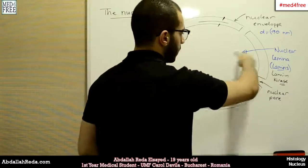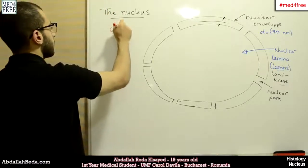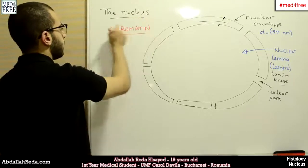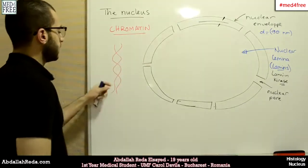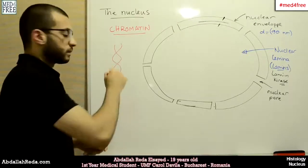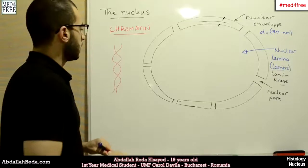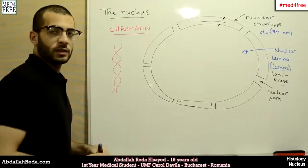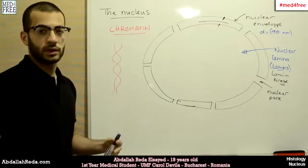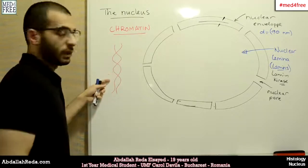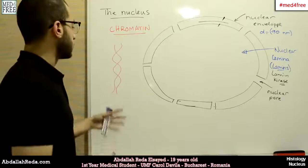Also integrated inside the lamina, we have the chromatin. Chromatin is the condensed form of DNA. The DNA is a double helix, and this double-stranded DNA loops and becomes more and more condensed — it loops around proteins called histones to form more condensed structures until it forms chromatin. The more condensed the DNA becomes, the harder it is to use in transcription. If the DNA is less condensed, it can be unwound and used in transcription easily.